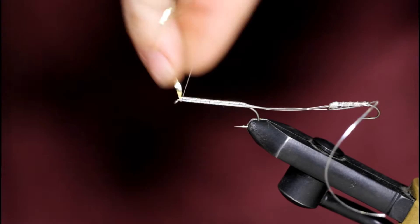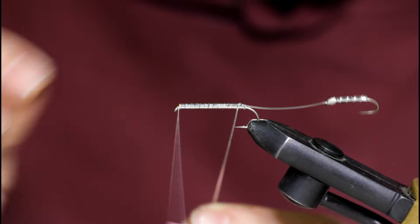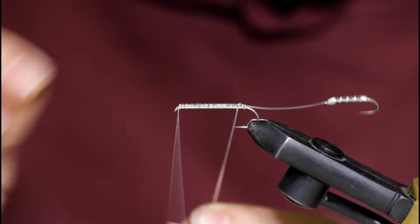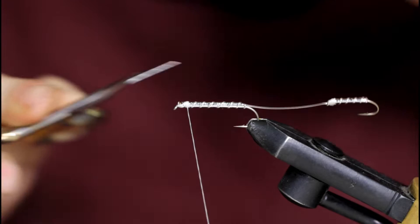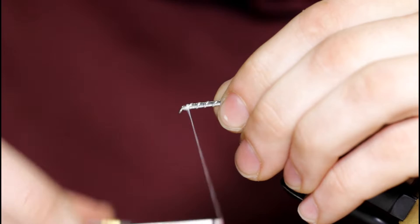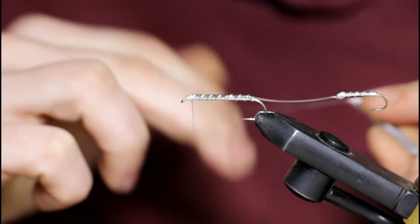And just a few wraps to secure it. Snip off the waste. And come in with the rib. Grab. Wrap forward. Snip off the waste. Now I'm just going to secure everything with a few turns. Come in and throw a couple half hitches in. And snip off the thread.